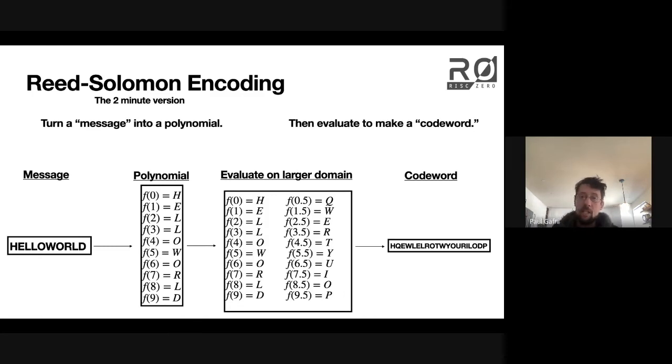And then we just evaluate that polynomial on a larger domain. So here I've put in between all the integer values, we can evaluate it at one half, and one and a half, and two and a half.